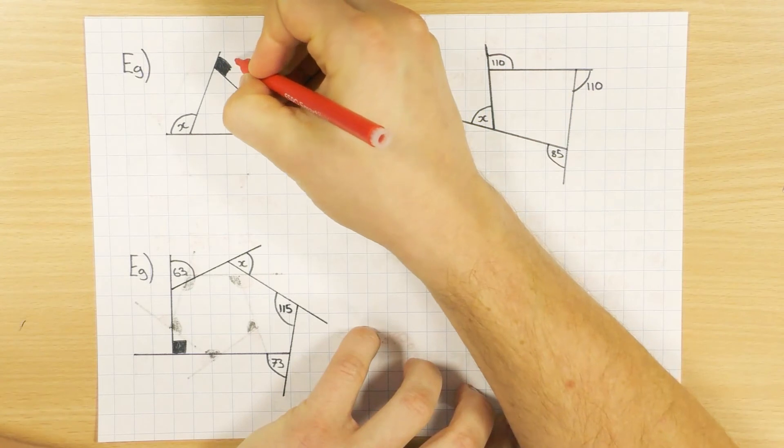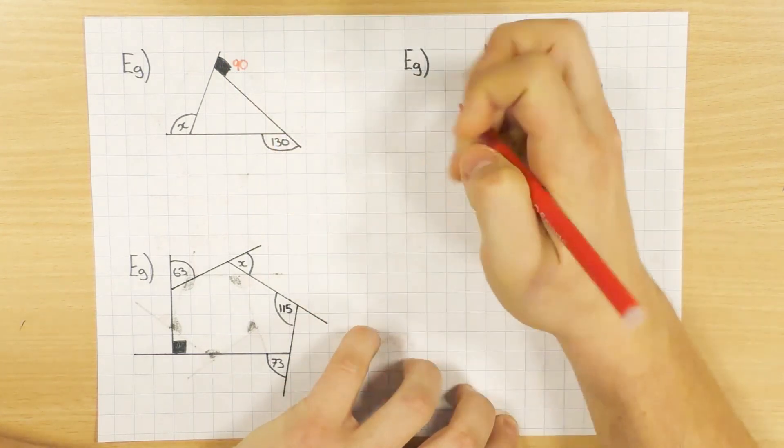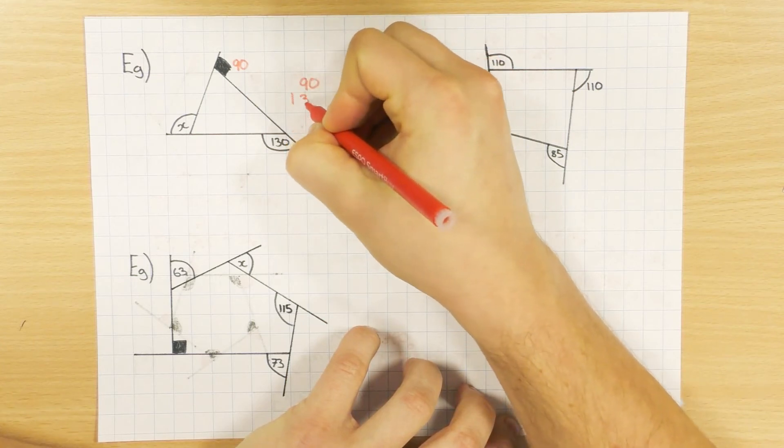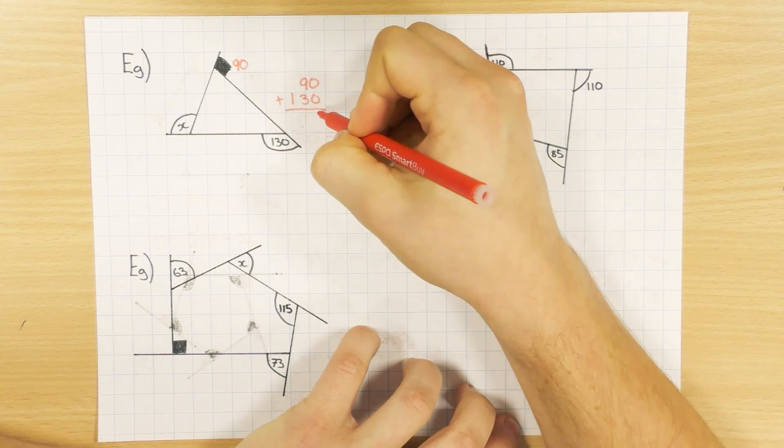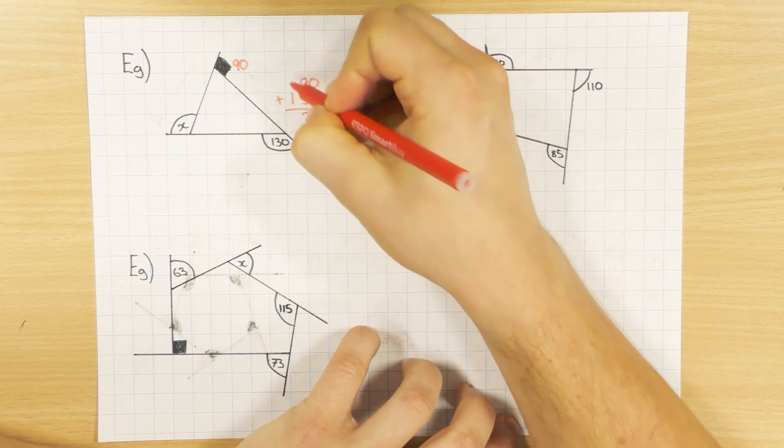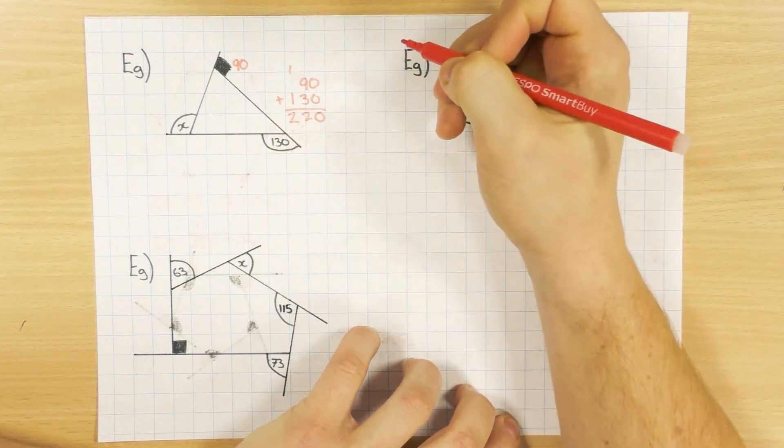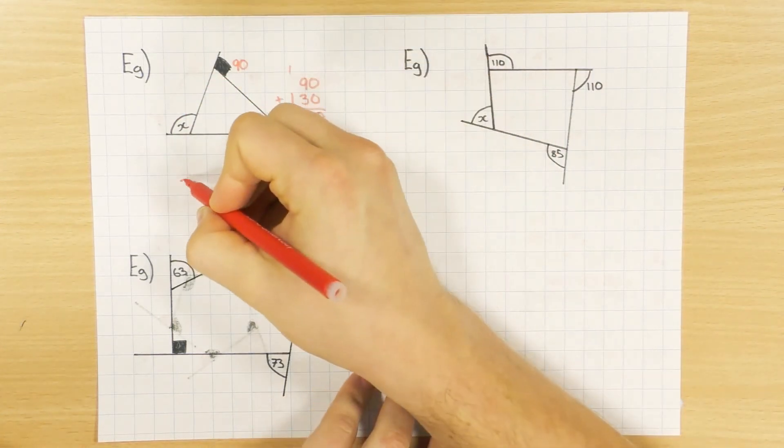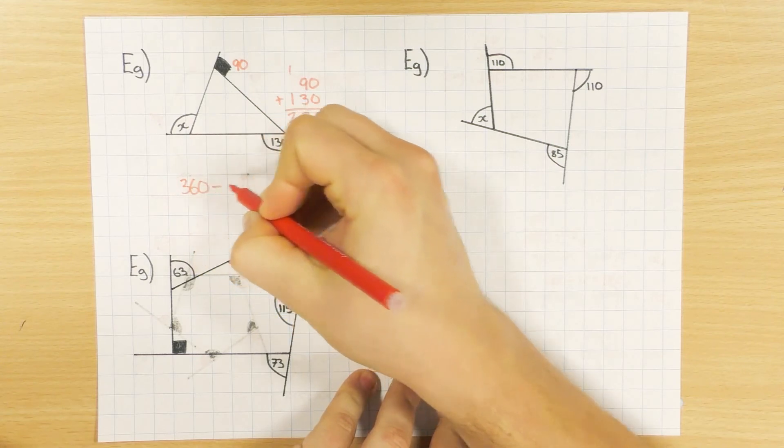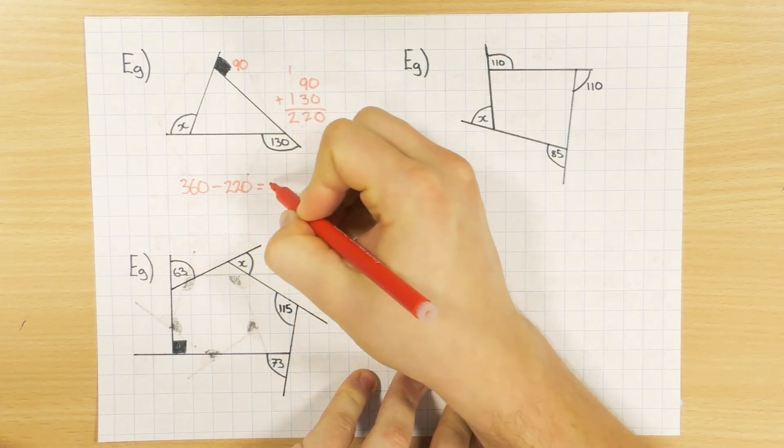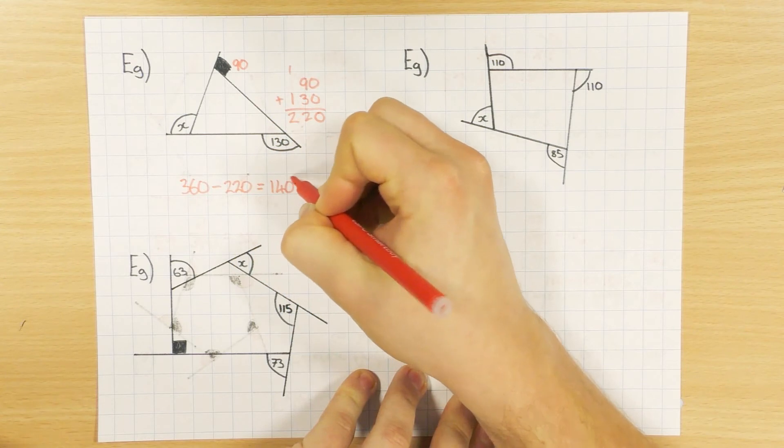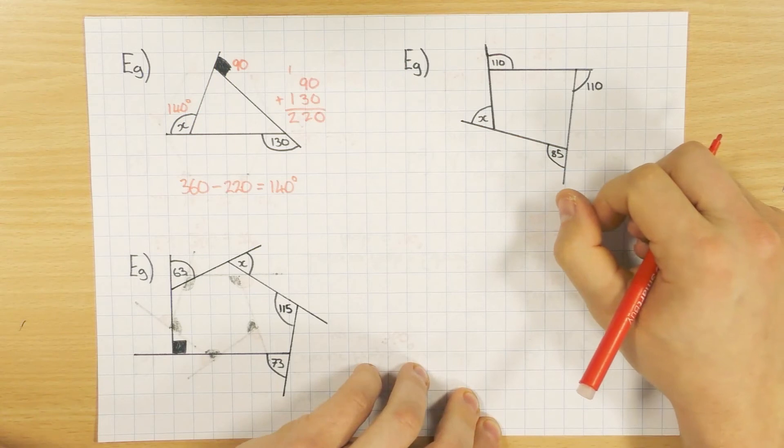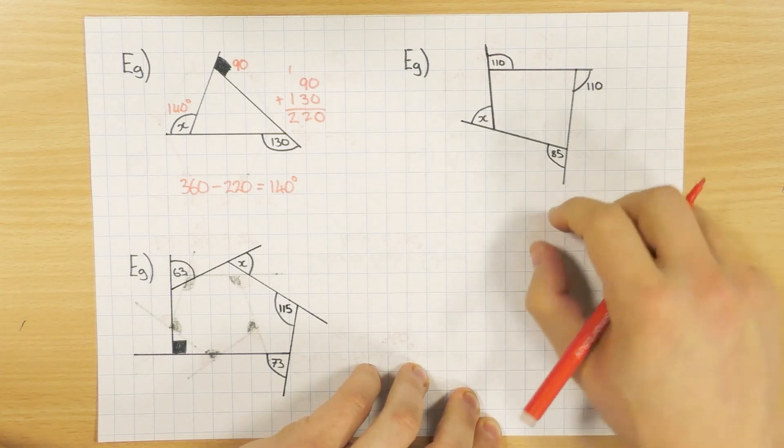If I've been given this one here as a right angle, which is obviously 90, that's 130. So if I do 90 plus 130, I can get the total of what I've got. That's going to be 220. And then obviously, because I know that they all add up to 360, 360 minus 220 will obviously give me 140 degrees. So that angle there would be 140 degrees. So even if they're irregular, the rule that they all add up to 360 is still the same.